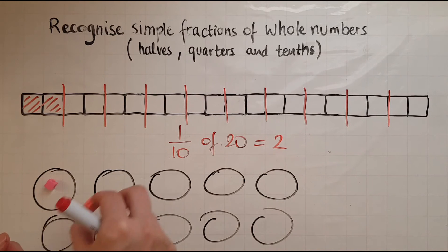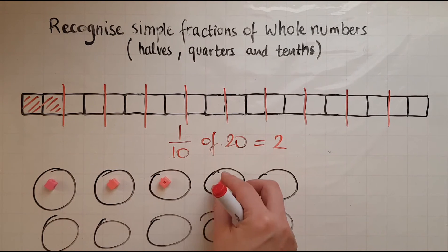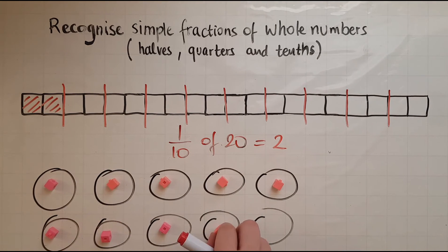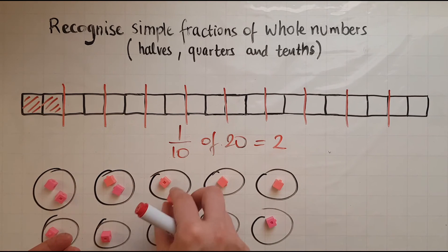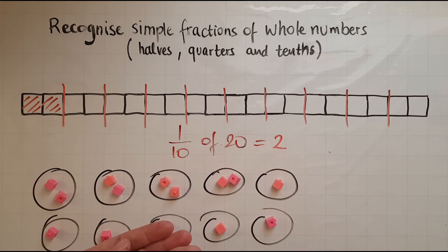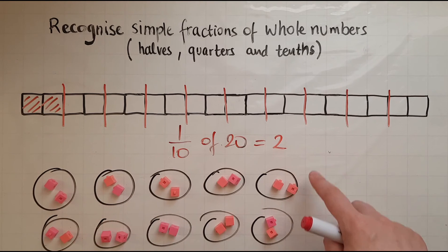So 1 in each. That is 10 so far. And I've got 10 left. So we'll place one in each group again. Right, so I've finished. How many do I have in each group? That is 2. Same as the answer that I had before.